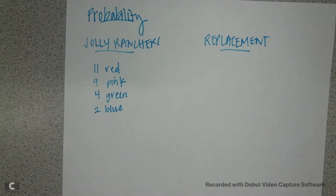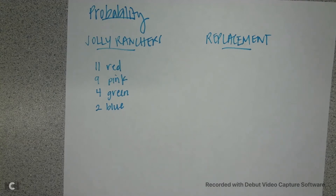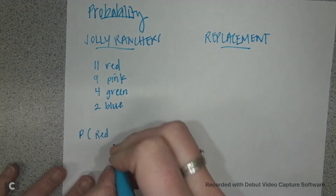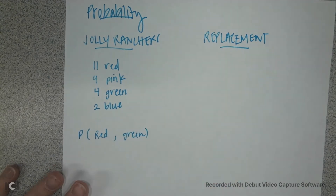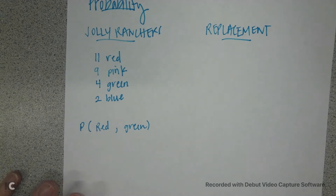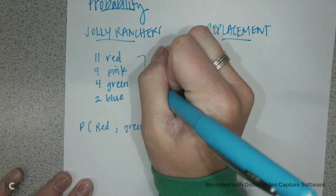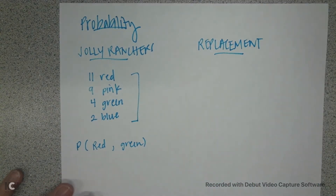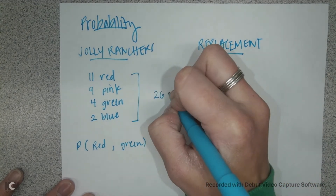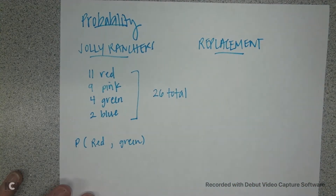For each of these probabilities I'm going to take a Jolly Rancher out of the bag and then put it back in. I'm going to start by figuring out the probability of choosing a red and then a green — this is with replacement. The first thing we have to do is figure out the total number of Jolly Ranchers, so if I add up 11, 9, 4, and 2, I get a total of 26.